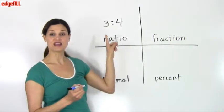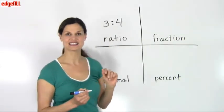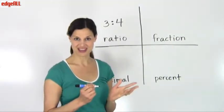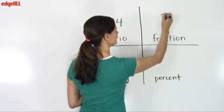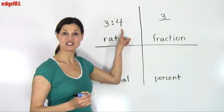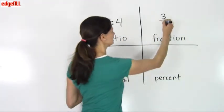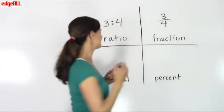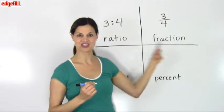Now, the ratio of 3 to 4 can be written as a fraction with 3 in the numerator and the 4 in the denominator. So there's for ratio and fraction and how they're related.